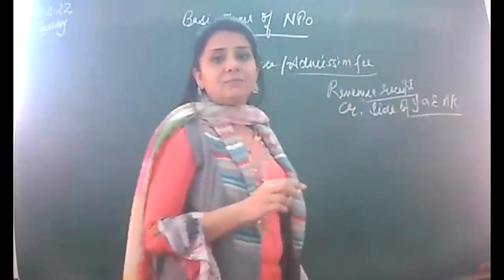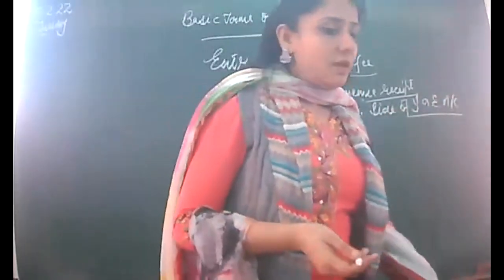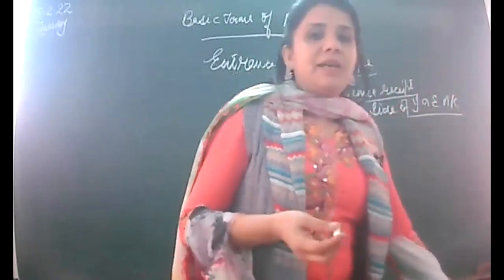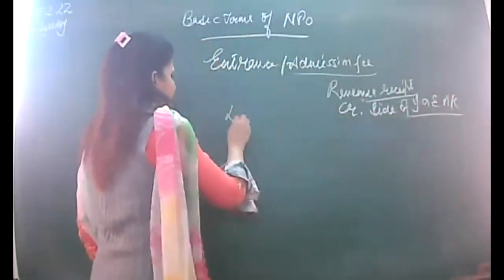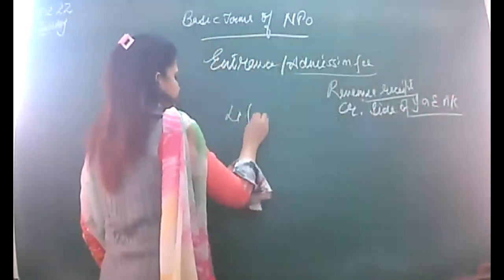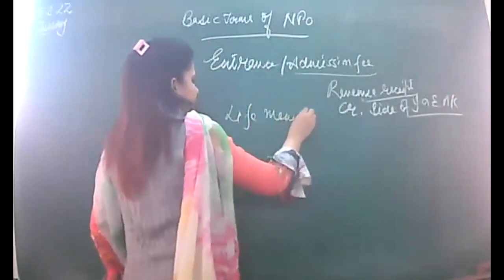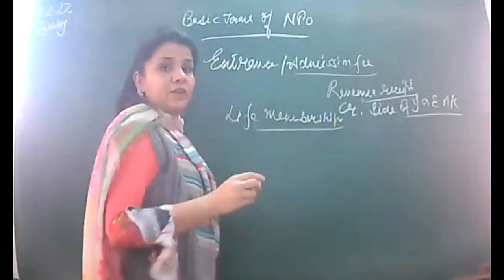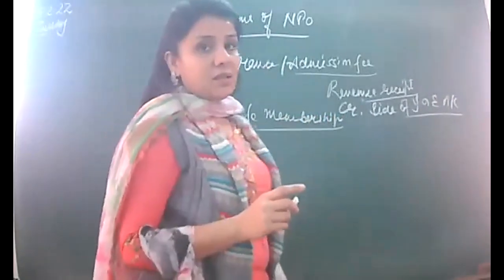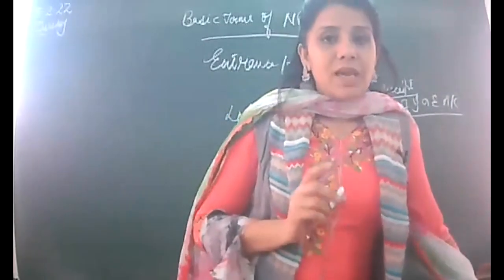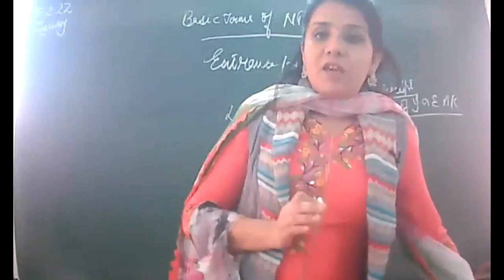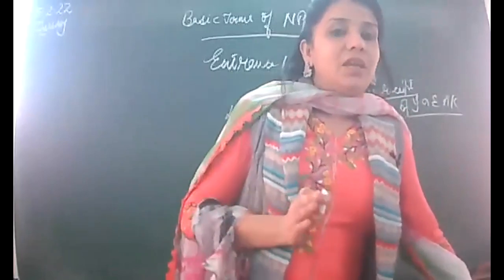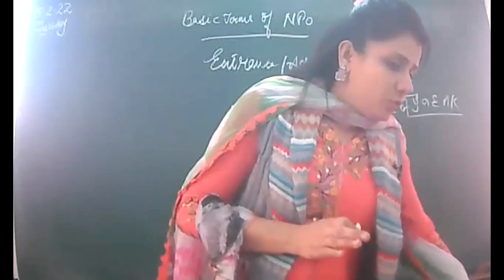Entrance fee is to be shown on the credit side of the income and expenditure account. Life membership fee, on the other hand, is paid by the members only once throughout their entire life, and for the whole of their life, they are considered a member of the NPO.